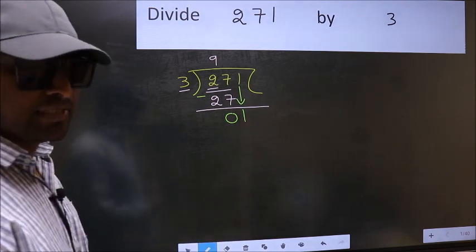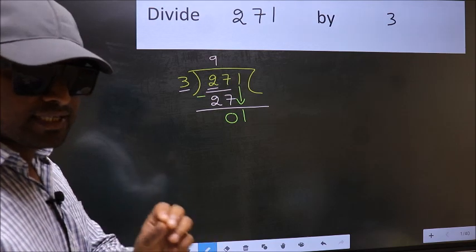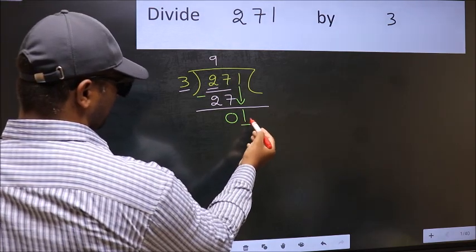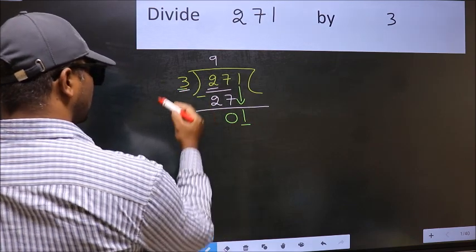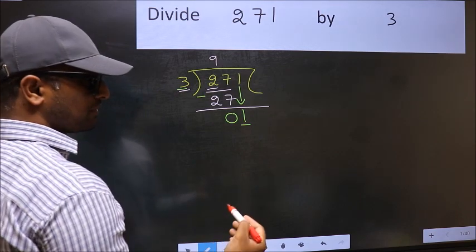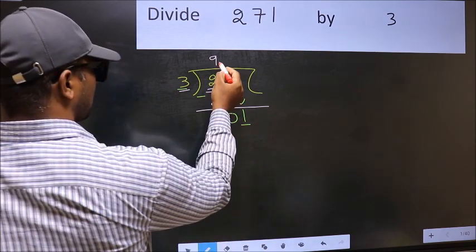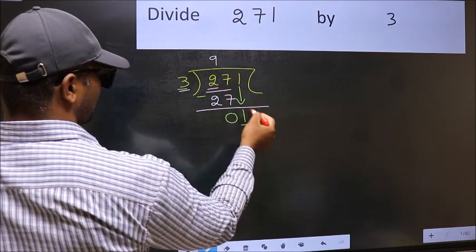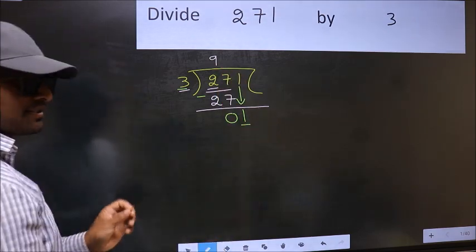After this step, the mistake happens. Here we have 1 and here 3. 1 is smaller than 3. So what many do is they directly put a dot and take 0 here, which is wrong.